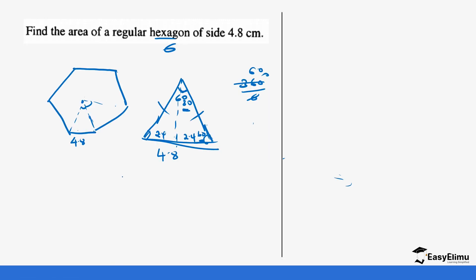Using trigonometry — opposite over adjacent = tan — we set up: tan(30°) = 2.4 / h, or equivalently tan(60°) = h / 2.4. Checking tan(60°) from natural tangent tables or logarithm tables, we get tan(60°) = 1.7321.